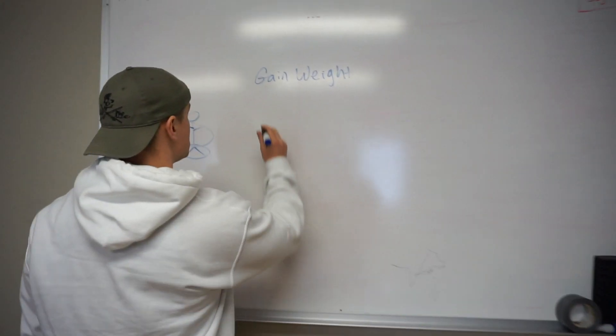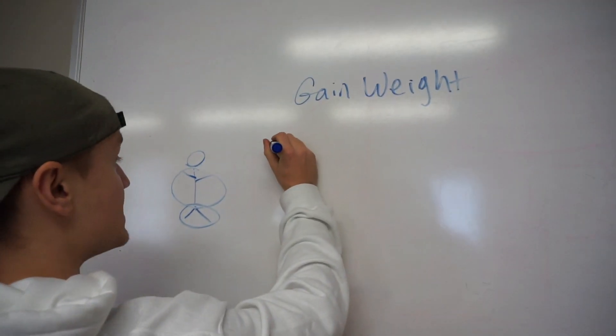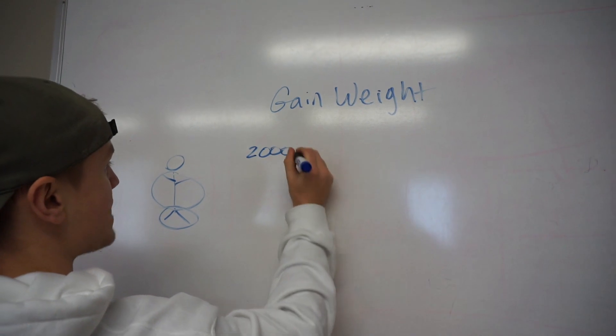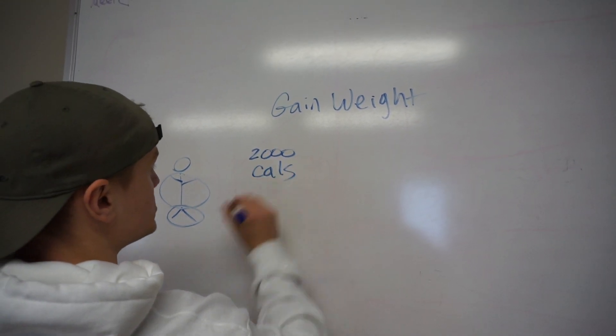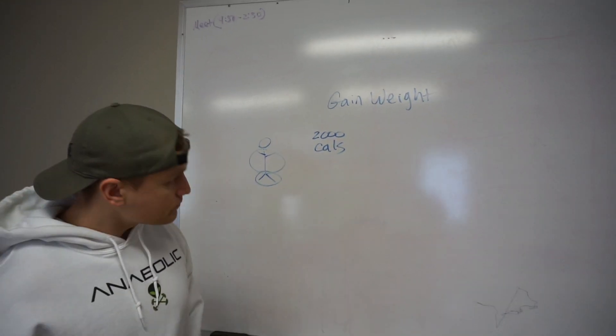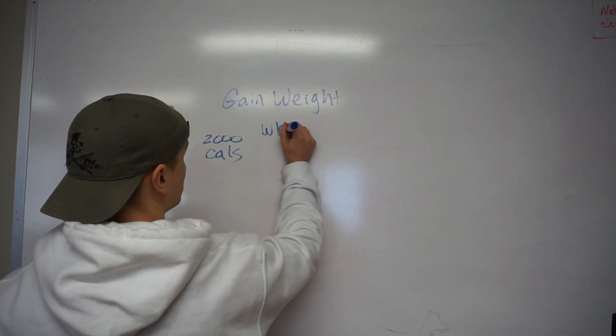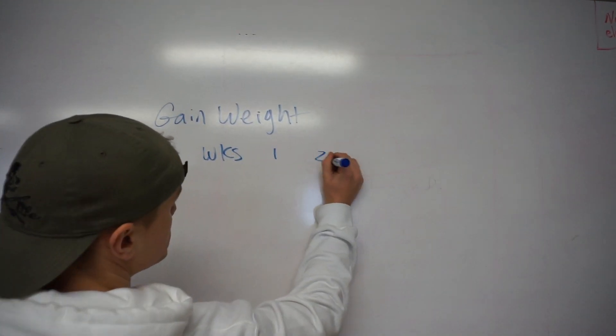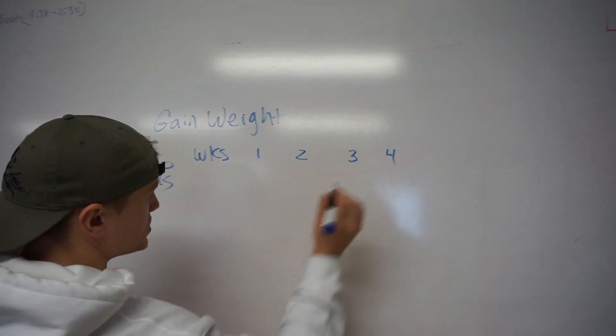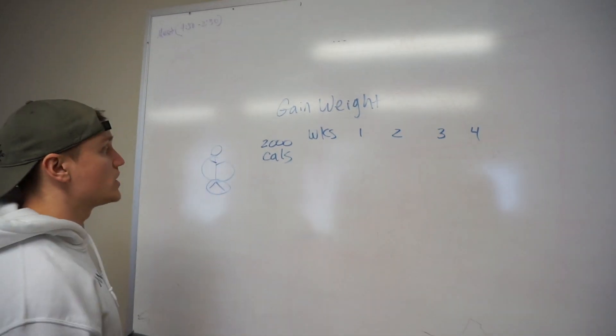So let's say, for a rough estimate, your daily caloric intake for maintenance is about 2,000 calories. Let's think about this on a weekly basis. We've got weeks here. Weeks 1, 2, 3, and 4. So let's say 4 weeks. You want to try this for about a month to start.